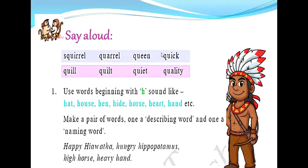The next textual exercise is 'Say Aloud.' Repeat these words: S-Q-U-I-R-R-E-L is squirrel. Q-U-A-R-R-E-L is quarrel. Q-U-E-E-N is queen. Q-U-I-C-K is quick. Q-U-I-L-L is quill. Q-U-I-L-T is quilt. Q-U-I-E-T is quiet. And Q-U-A-L-I-T-Y is quality. Well done children.